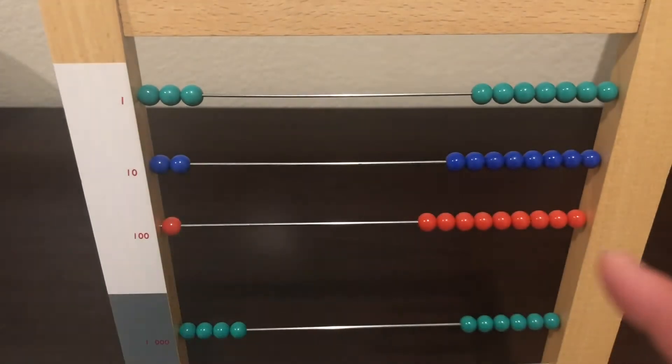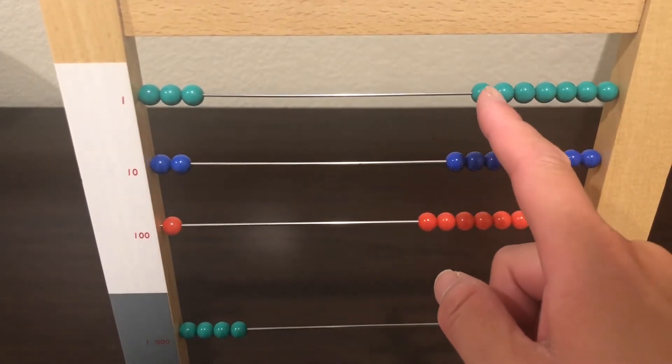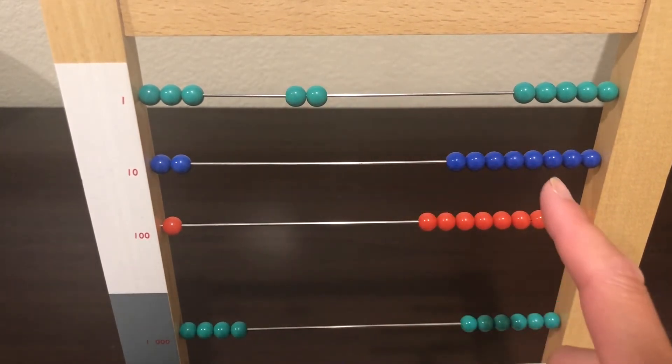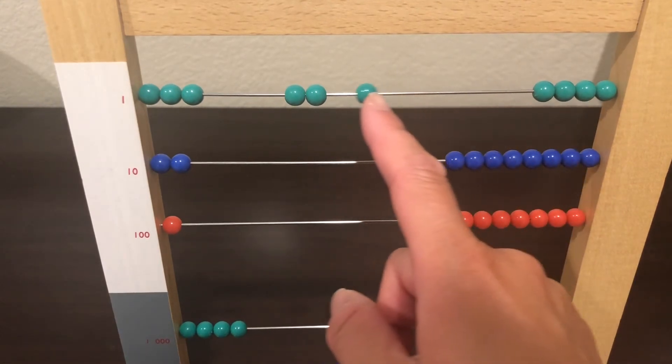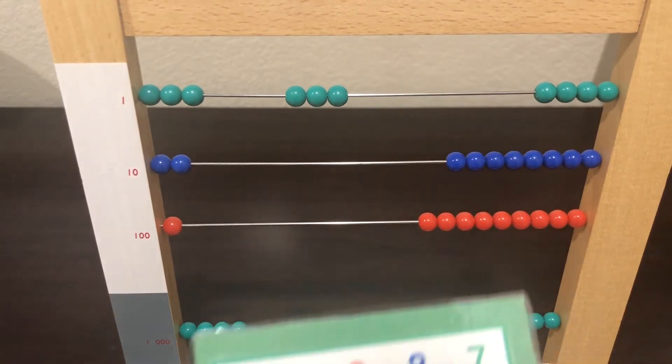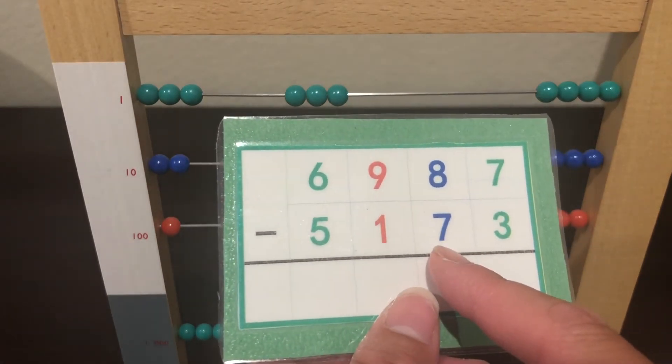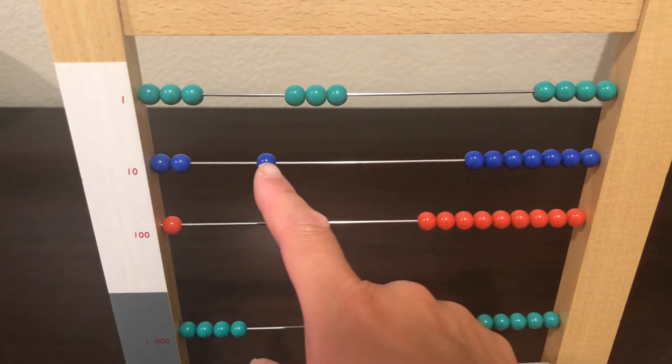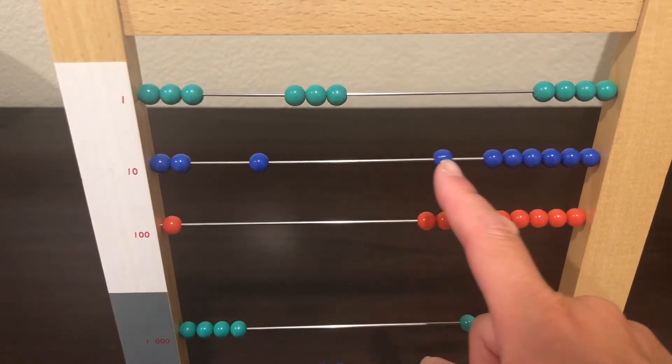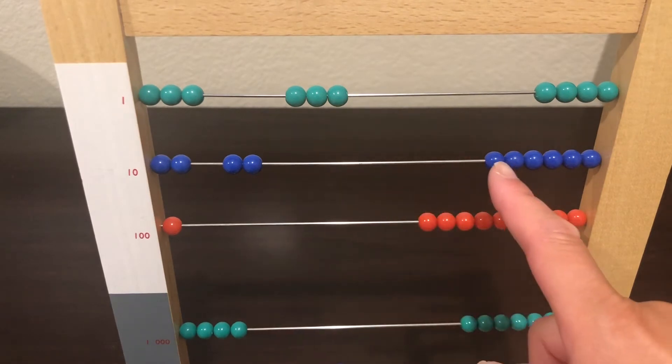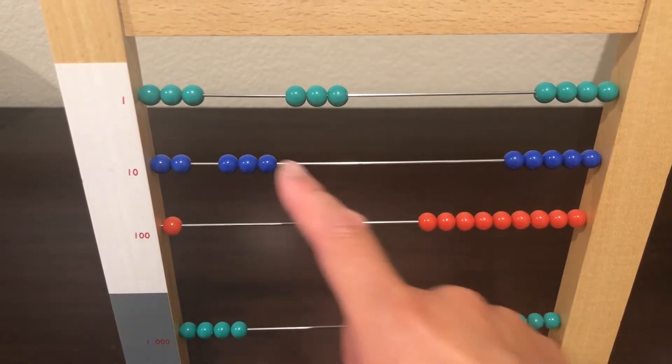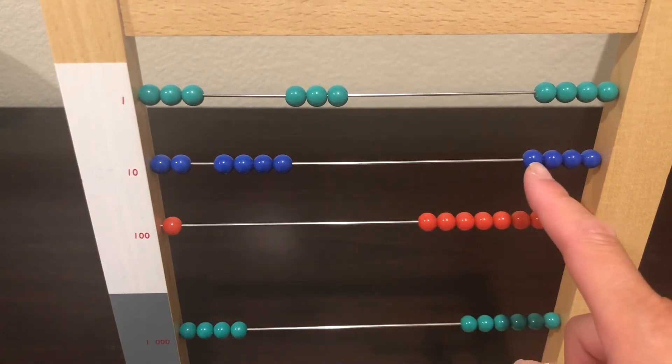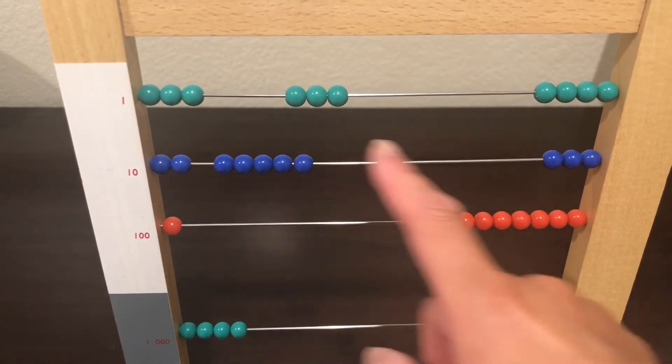Let's take away 3 units. 1 unit, 2 units, 3 units. And we are going to take away 7 tens. 1 ten, 2 tens, 3 tens, 4 tens, 5 tens.